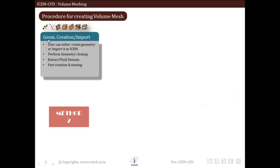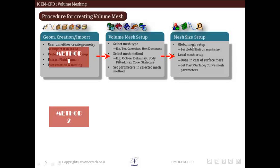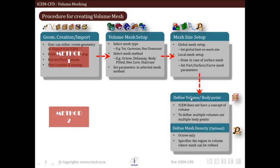Let us now see the two procedures for creating volume mesh. In Method 1, we import or create a geometry, perform geometry cleanup, extract the fluid domain, and create and name the different parts in the CAD model. After this, we move directly to the volume mesh setup. We select the mesh type — it can be tet, partition, or hex dominant — then select the mesh method, which can be octree, Delaunay, body-fitted, hex core, staircase, etc. Then we set the parameters for the selected mesh method and give the mesh size setup, either using global mesh setup or local mesh setup with surface or curve mesh parameters.